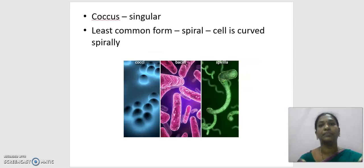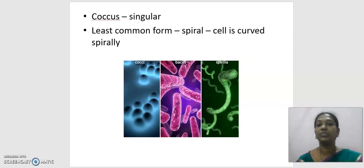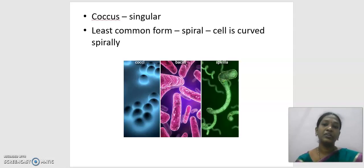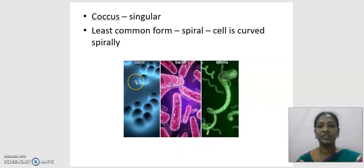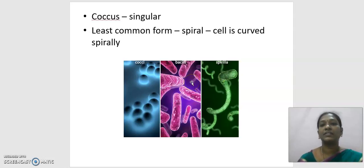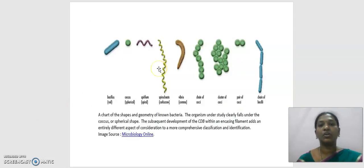The next form is coccus, where coccus is the singular form and cocci is plural. Cocci are in a round or oval shape. The last and least common form is the spiral, where the cell is curved in a spiral shape — like a spiral binding. In the pictures, you can see: the first shows cocci in round or oval shape, the center shows the rod-shaped bacillus, and the last shows the spiral form.